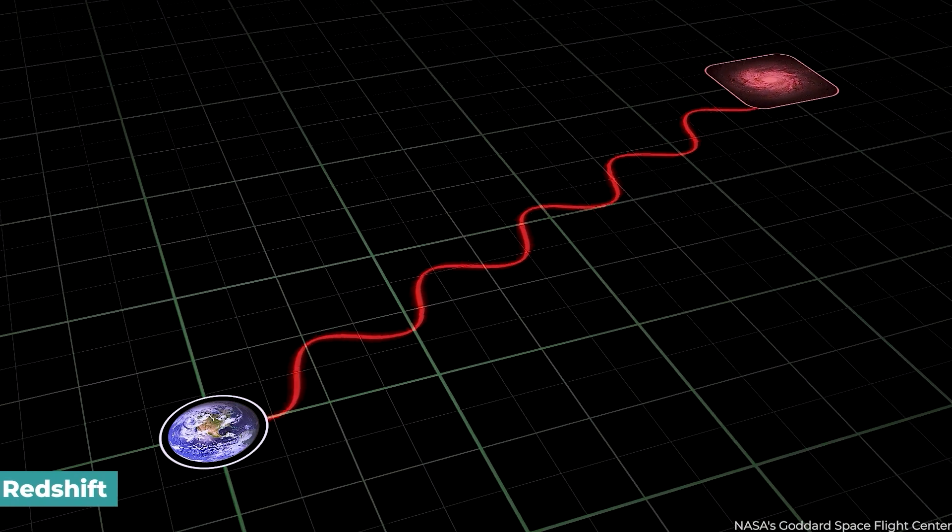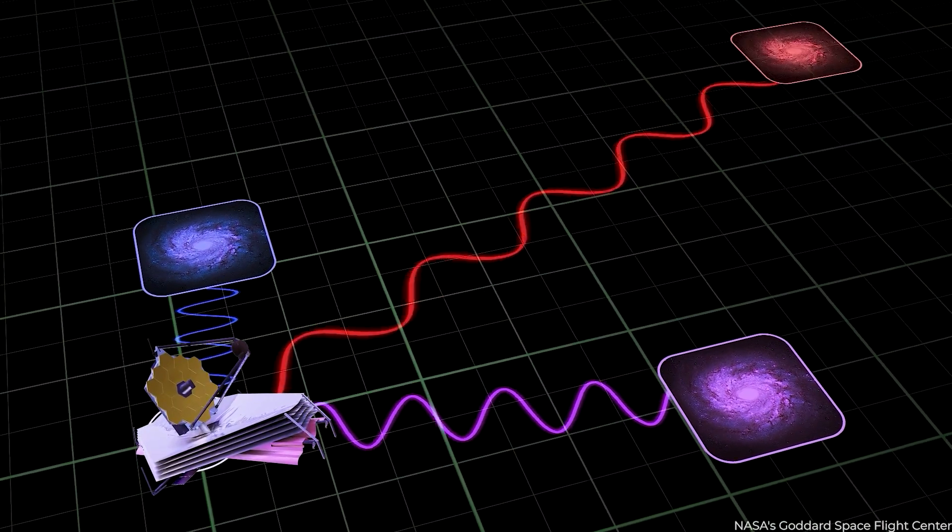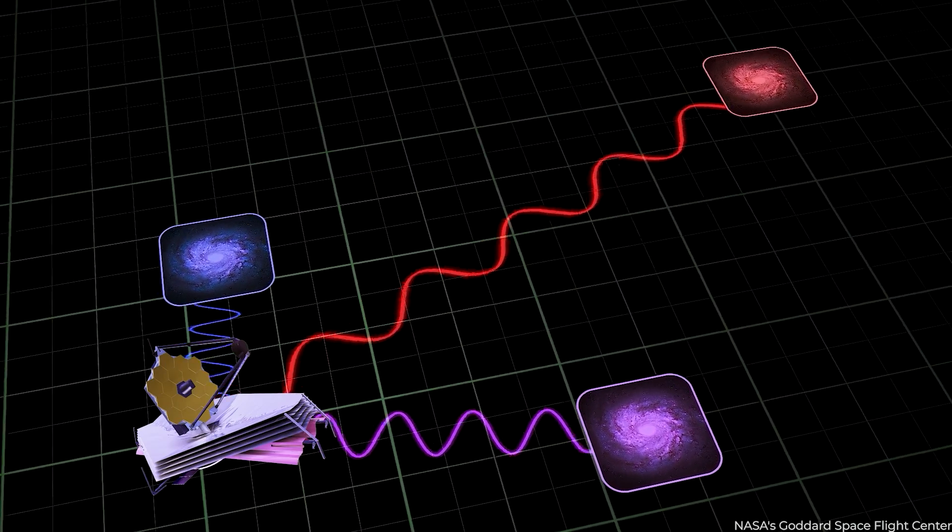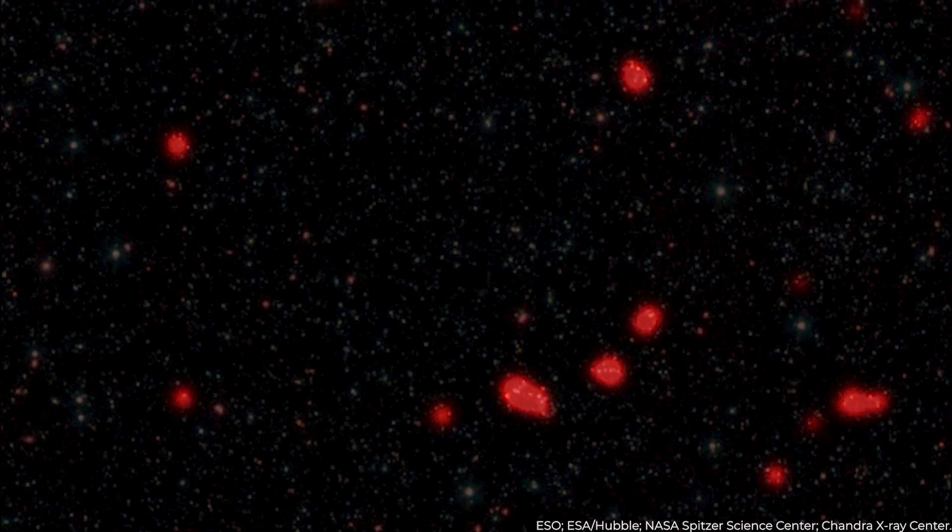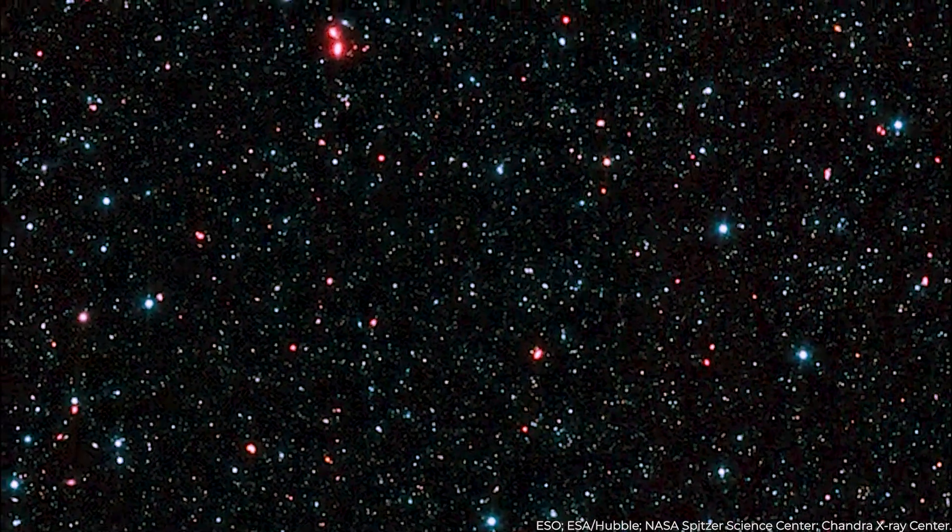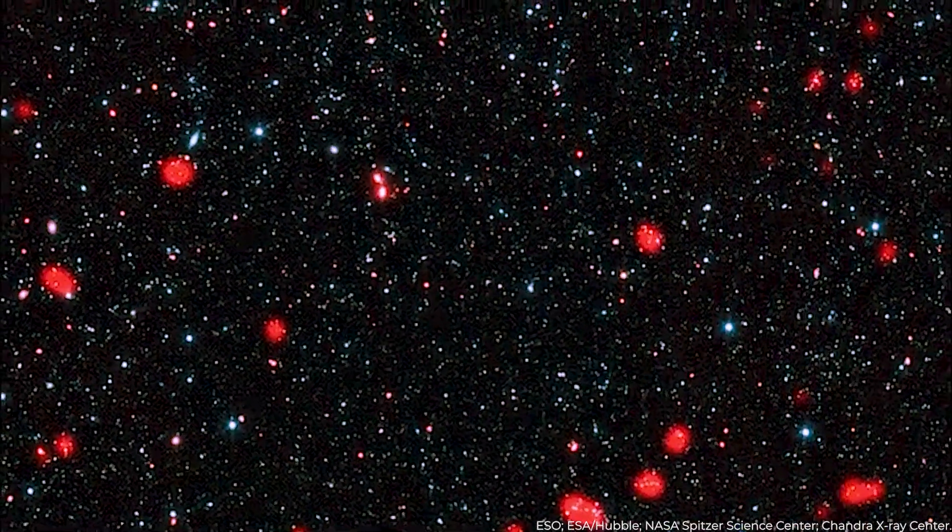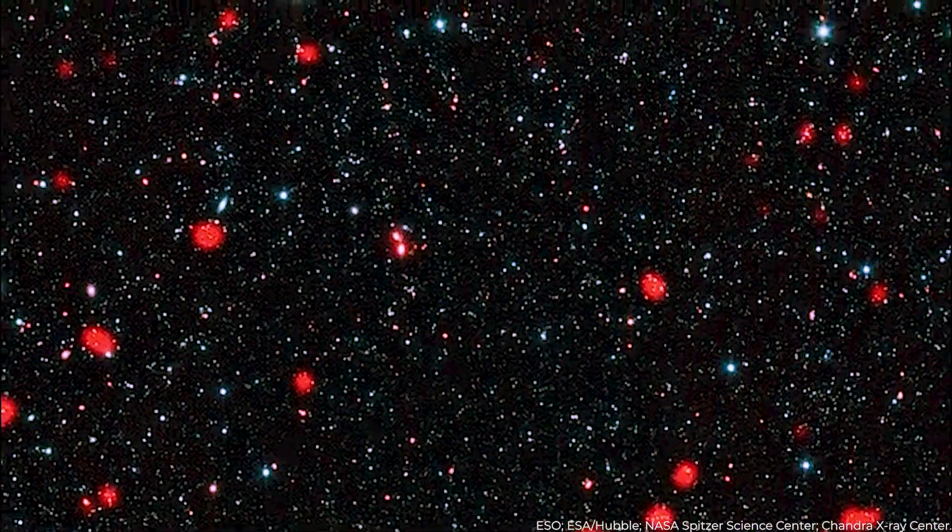The evidence for the Big Bang is often thought to be based on two facts. First, that more distant galaxies have greater redshift than nearby ones, and second, that the universe is filled with a cosmic background of microwave radiation. The first implies that the cosmos is expanding in all directions, while the second means that it was once scorching and dense.